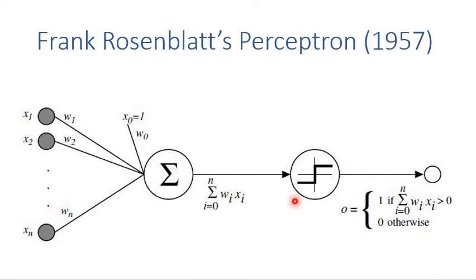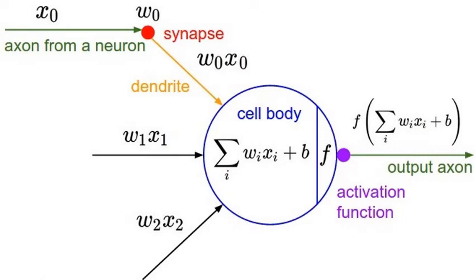We'll see a better representation in the next slide. Once we calculate the weighted sum of the inputs, we use an activation function. Here the activation function just compares with 0: if the weighted sum is larger than 0, the output is 1; otherwise the output is 0. In the 1950s, Dr. Rosenblatt designed a hardware device to implement this function. Although the idea of the perceptron is very similar to neurons in today's deep learning, Dr. Rosenblatt didn't develop a mechanism to train multi-layer neural networks, so the performance of the perceptron was not very good.